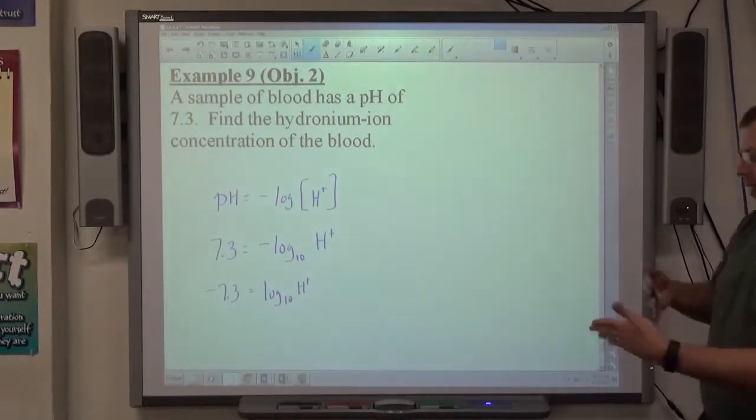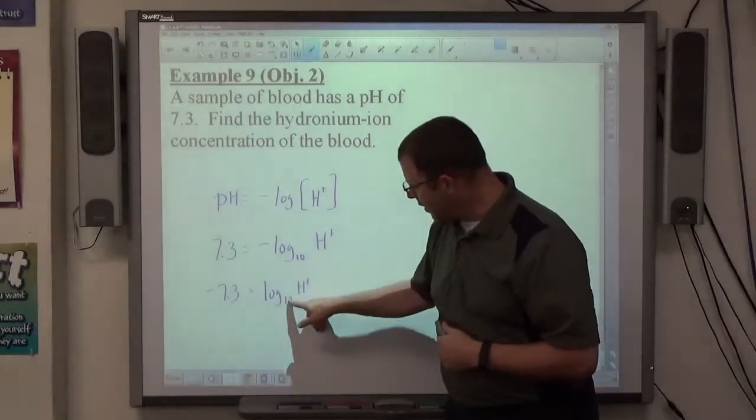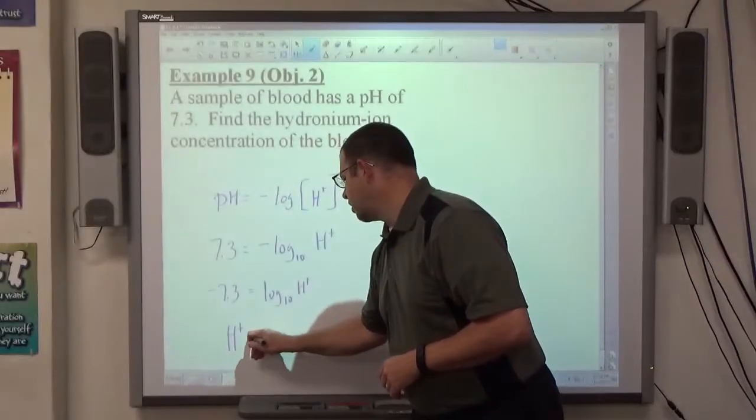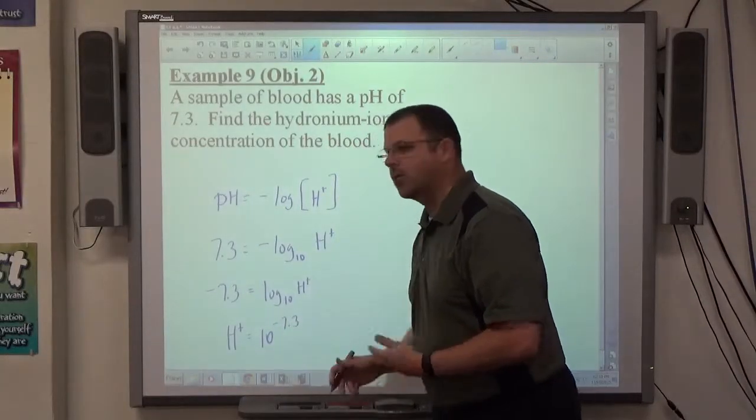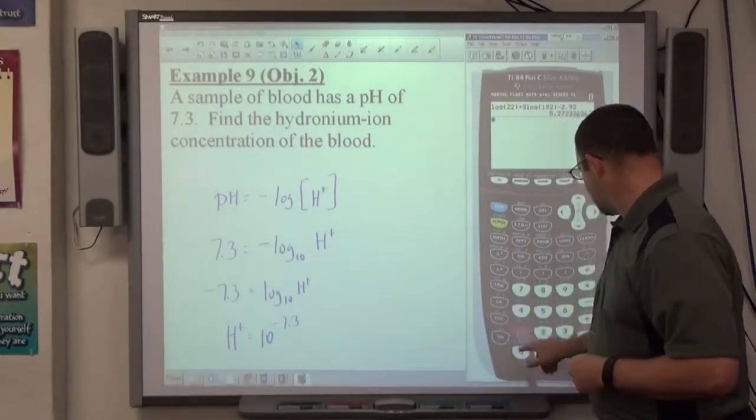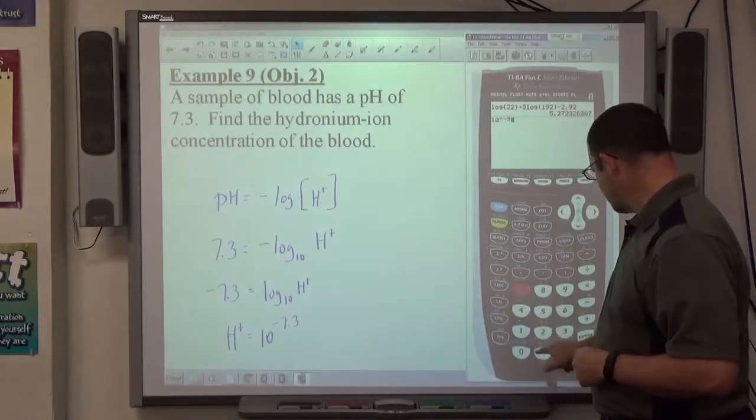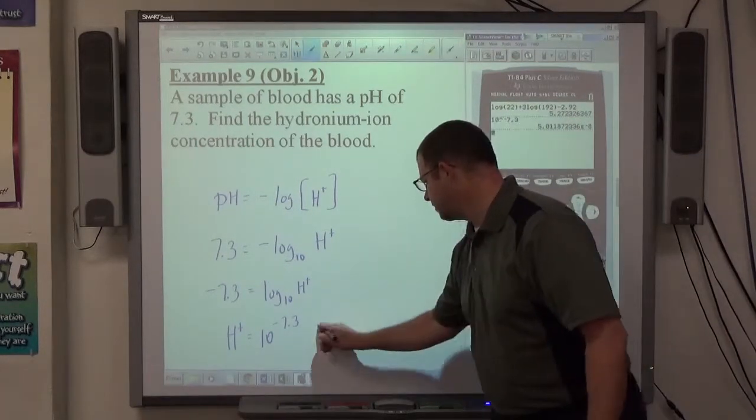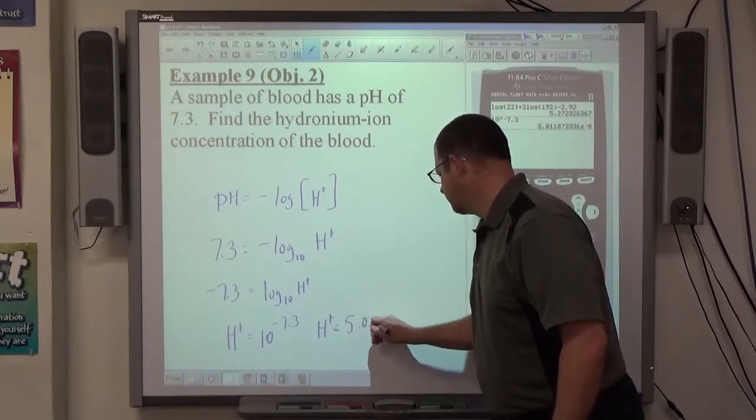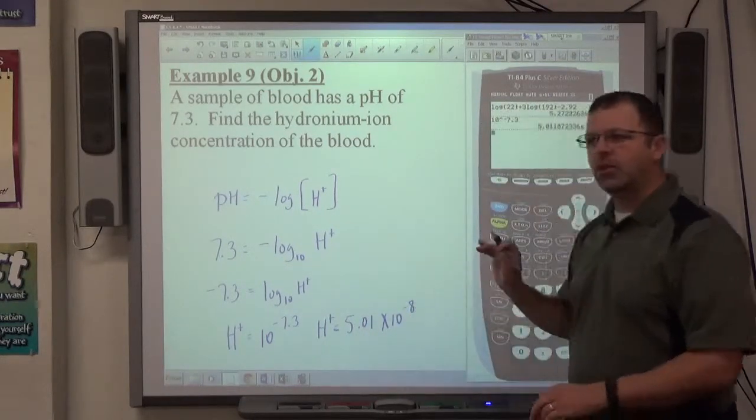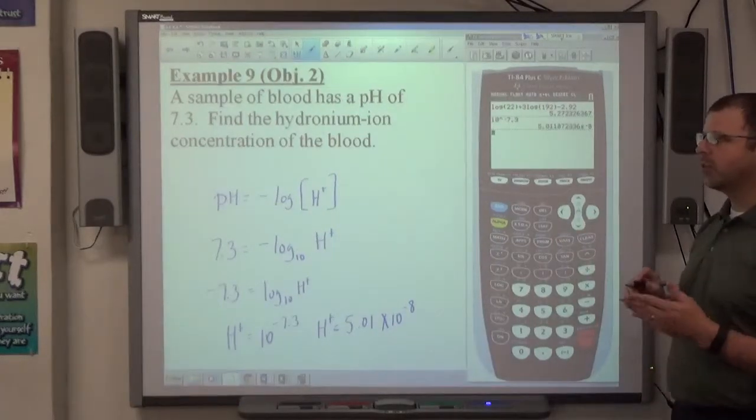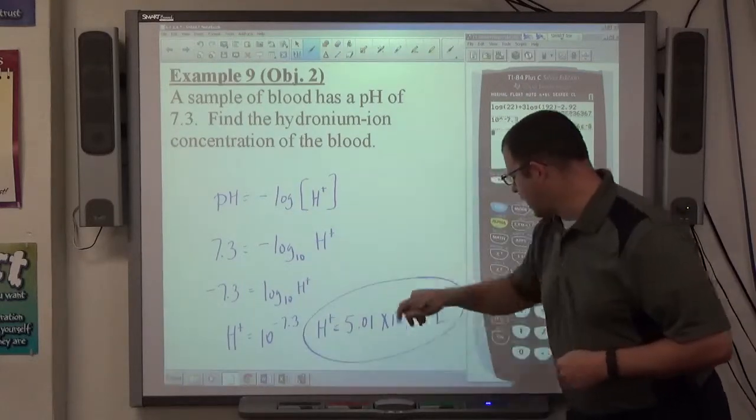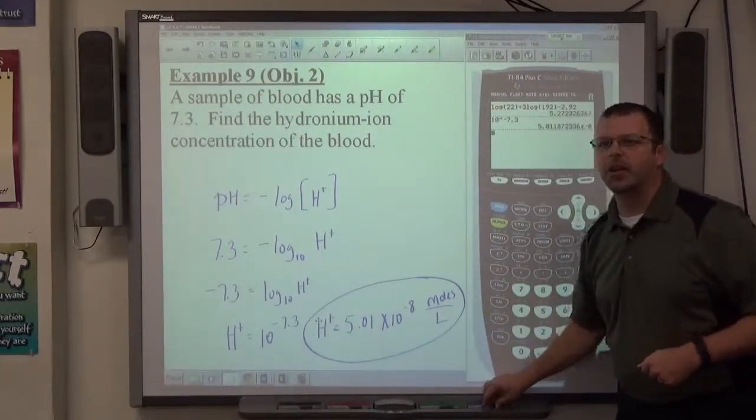And to find H+, if I just change it back to exponential form, this base raised to that power equals H+, right? So H+, it's simply going to be 10 to the negative 7.3 power, which I would then enter my calculator. 10 carat negative 7.3 equals comes out to 5.01 times 10 to the negative 8. And the unit on hydronium ion is always moles per liter. So it's moles per liter.